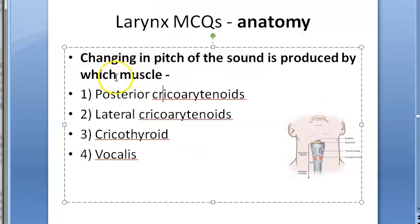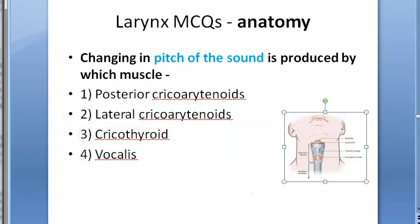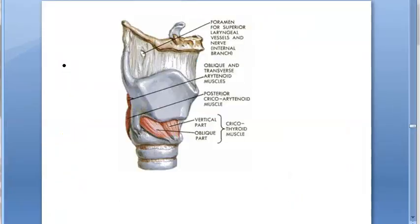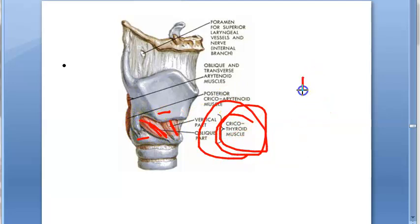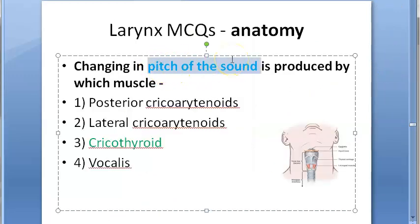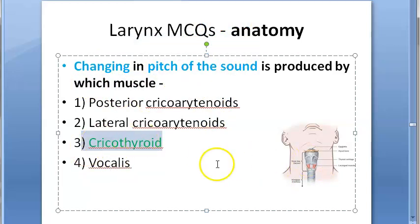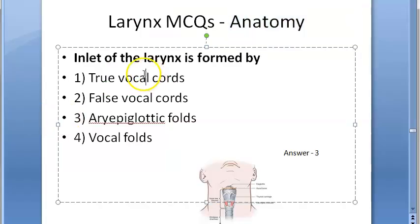Which muscle is responsible for changing the pitch of sound? The options are posterior cricoarytenoid, lateral cricoarytenoid, cricothyroid, and vocalis. The answer is cricothyroid — number three. Between the cricoid and thyroid cartilage you have the cricothyroid muscle, with its vertical and oblique parts. This muscle is responsible for changing the pitch of sound.